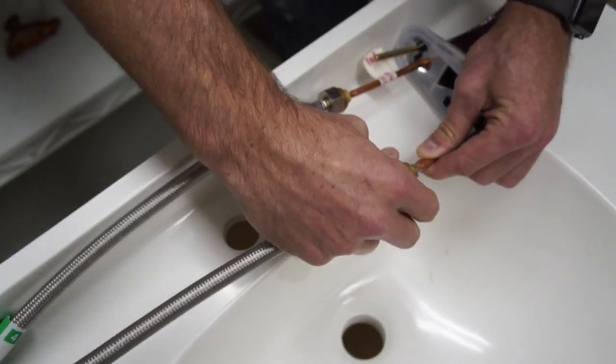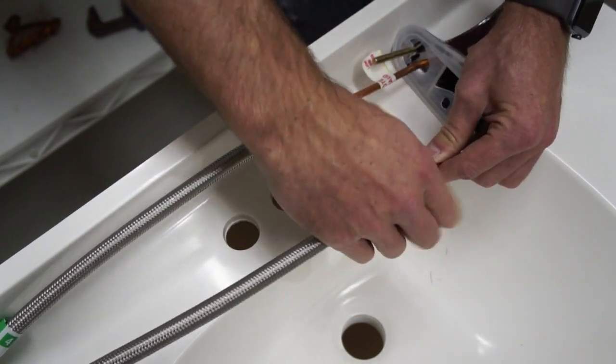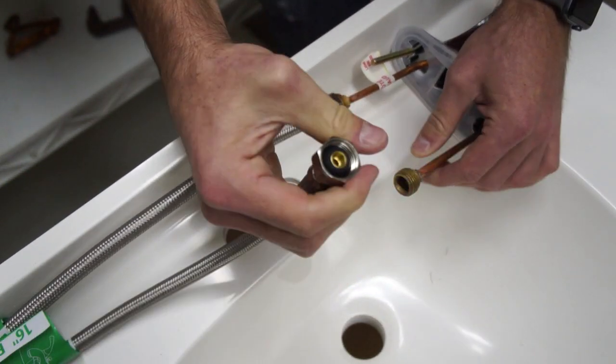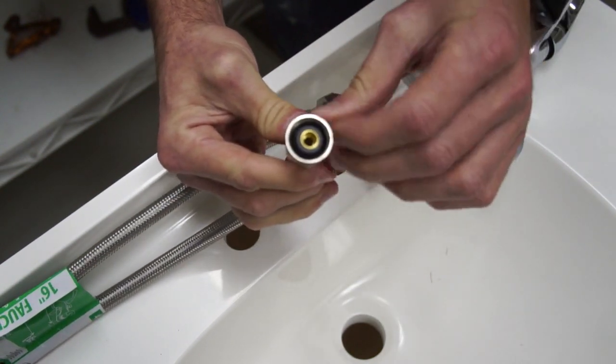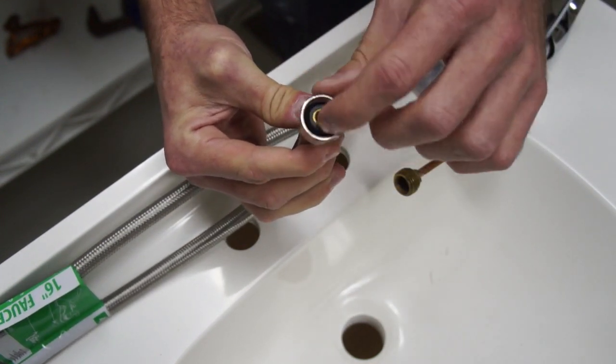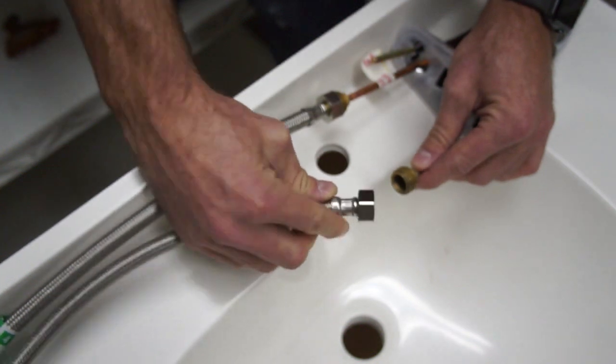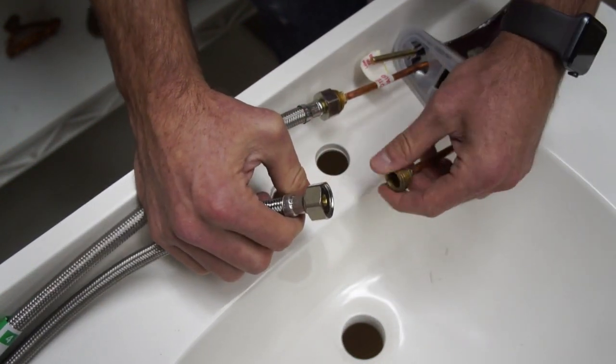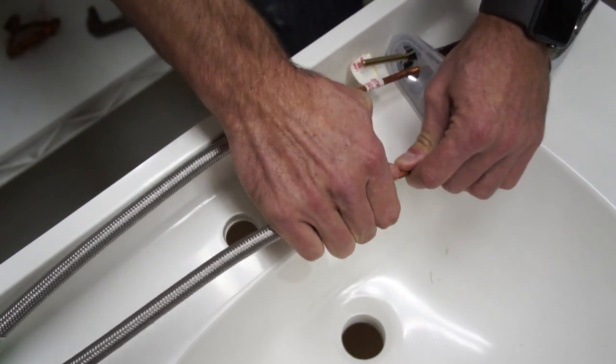But you'll start by just screwing them on finger tight. These connections that we're using have a rubber gasket in them. These pre-made connections with the rubber gaskets in them don't need to use the thread tape or Teflon. They're relying on the rubber gasket to keep it secure from leaks. If you want to put thread tape on there, you can. But to save us the mess today, I am not going to do that.